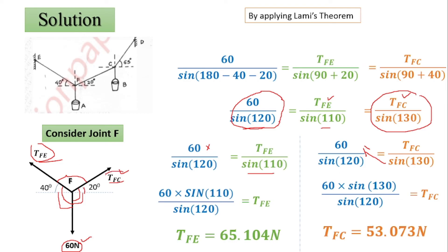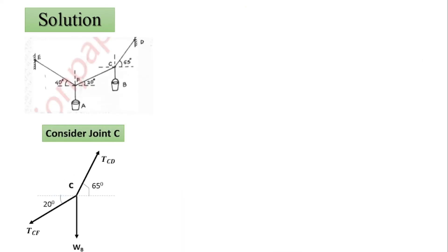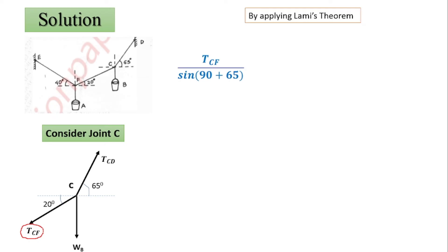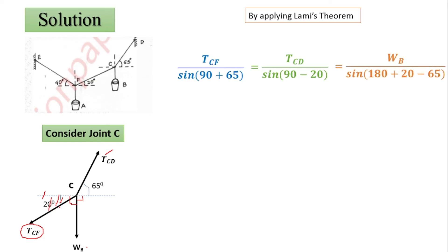Now that we have TFC, we can use TCF equals 53.073 Newton at joint C. Starting with TCF: the remaining two forces are WB and TCD, and the angle between them is 90 plus 65 degrees, which is 155 degrees. For force TCD: the remaining two forces are TCF and WB, and the angle is 90 minus 20, which equals 70 degrees. For WB: the remaining two forces are TCF and TCD, and we need to calculate this angle — it is 180 minus 65, and then we should add the additional 20 degrees.